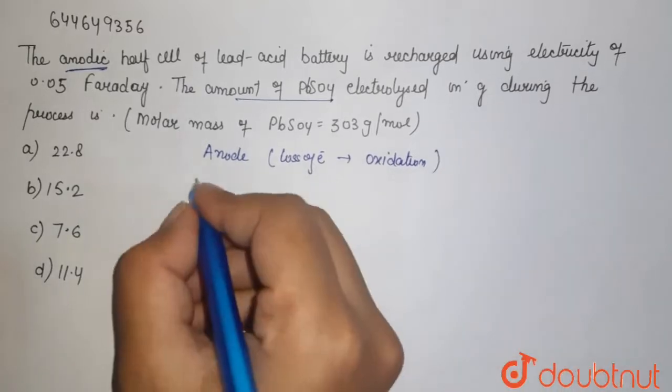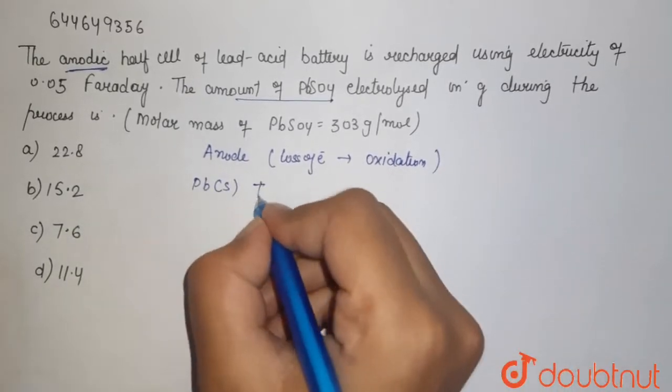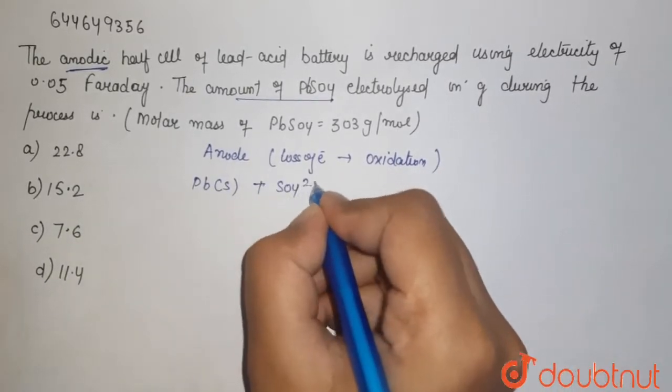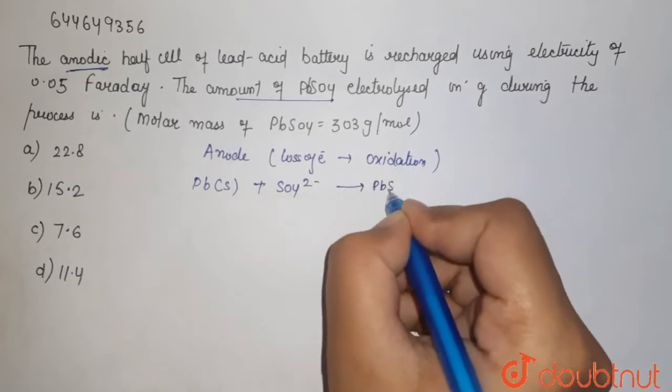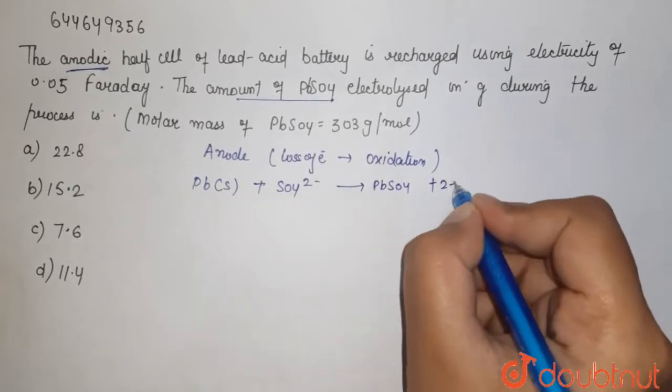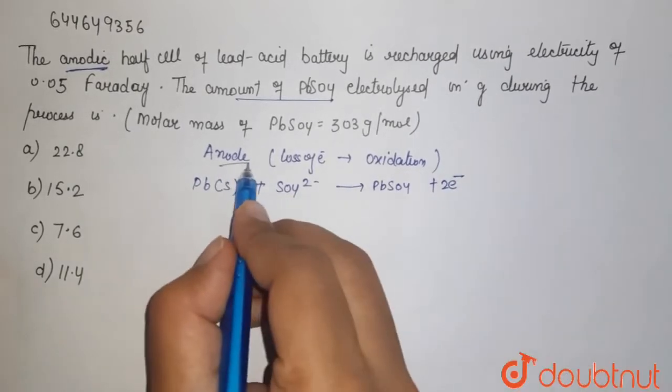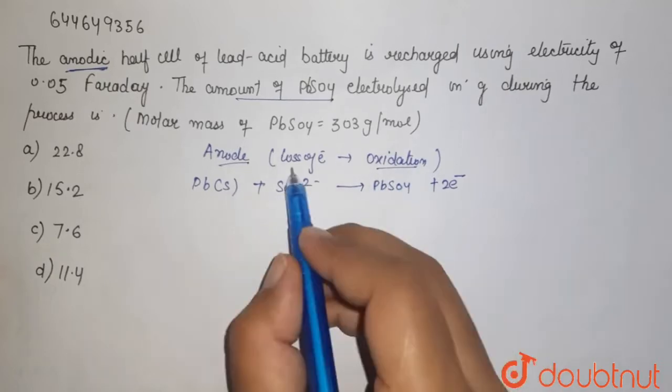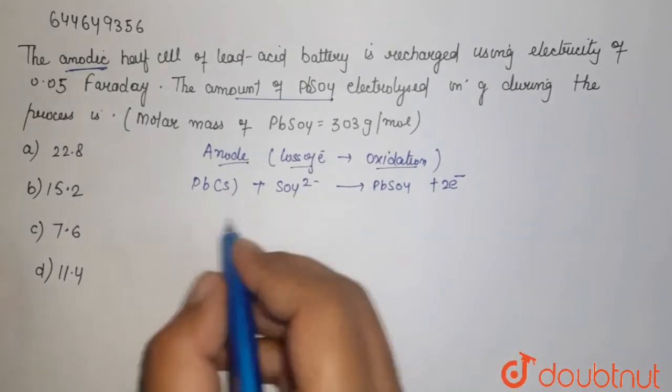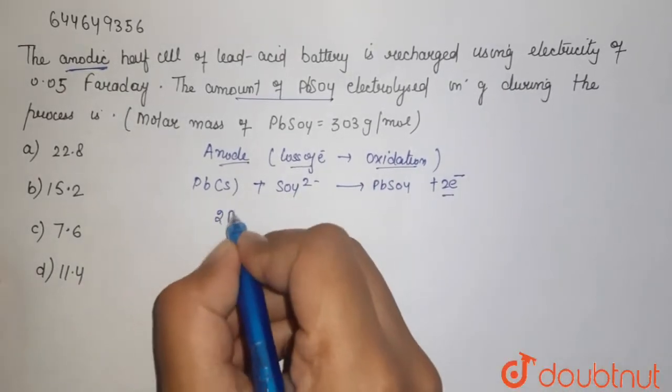Now here we are having solid lead which reacts with sulfate and forms PbSO4 and liberates two electrons. Why? Because it is the anode compartment where oxidation takes place, that is loss of electrons. Now if you see, two electrons means there are two Faraday.